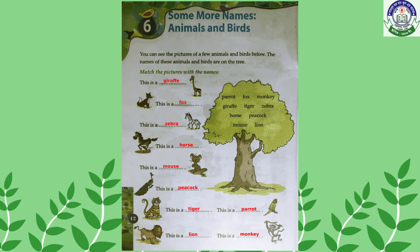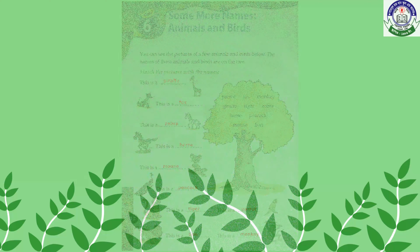In this box you have to write the names of the animals and birds. You can see the pictures of a few animals and birds below, and the names are on the tree. The first one is a giraffe, the second one is a fox, then a zebra, then a horse, a mouse, a peacock, a tiger, a parrot, a lion, and the last one is a monkey.